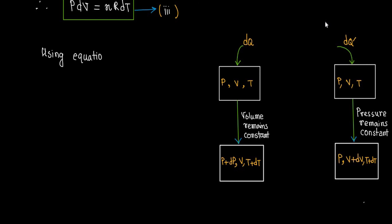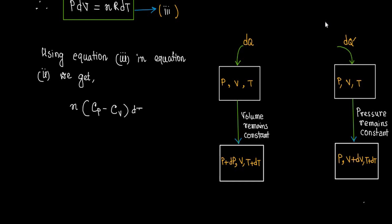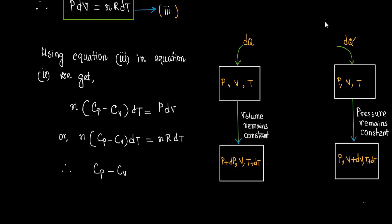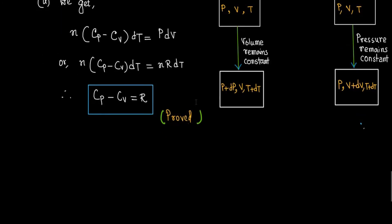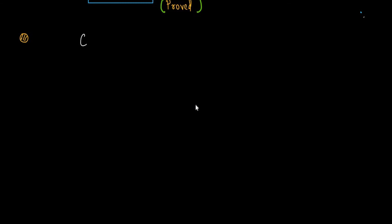Using equation 3 in equation 2, we get n(Cp minus Cv) dT equals nR dT. Therefore, Cp minus Cv equals R. Hence this equation is proved. The difference of molar specific heat of an ideal gas at constant pressure and volume equals the universal gas constant R.